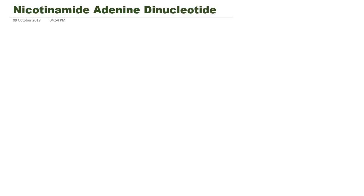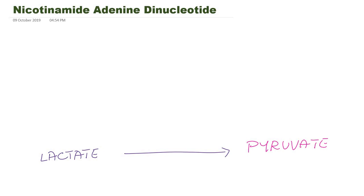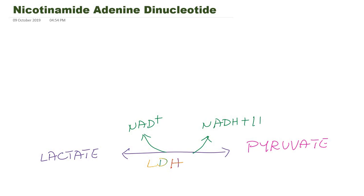I will write a reaction where NAD, or nicotinamide adenine dinucleotide, acts as a coenzyme. Lactic acid or lactate is converted to pyruvate, catalyzed by the enzyme lactate dehydrogenase. This reaction takes place in both directions — it is reversible. This reaction requires the coenzyme NAD+, derived from niacin.